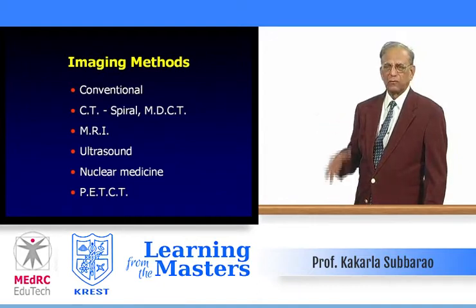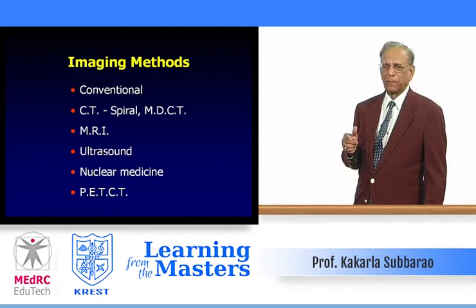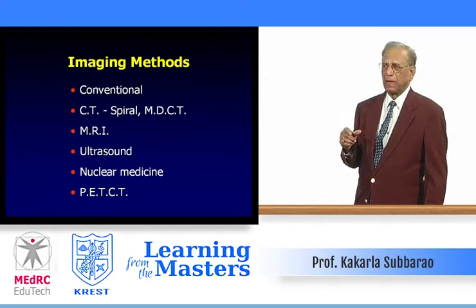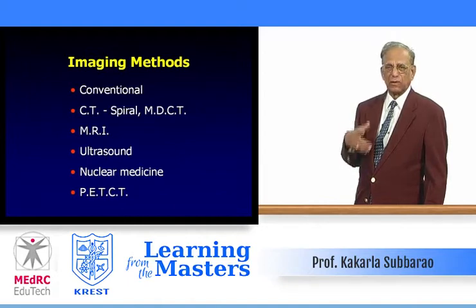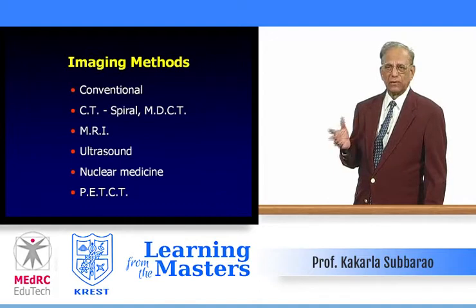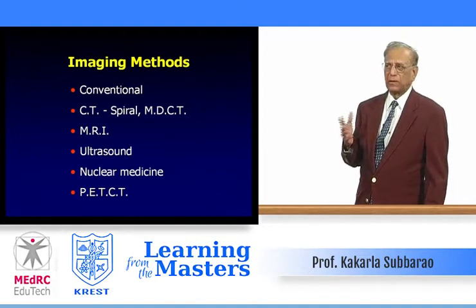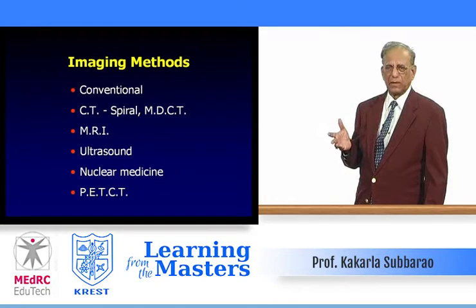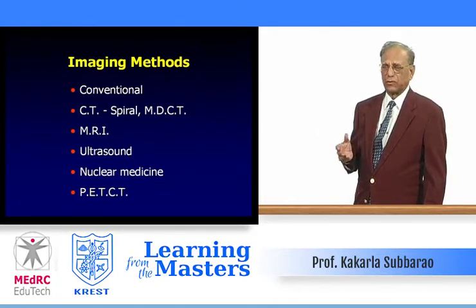And then we have magnetic resonance imaging. Ultrasonography is used occasionally, particularly in pediatric hips. And then nuclear medicine — whenever you suspect osteonecrosis of the head of the femur or early pathologies, you can use nuclear medicine with a gamma camera and Technetium-99 isotope.